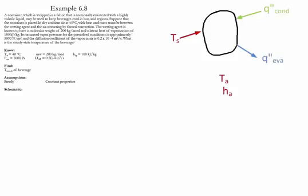Suppose that the container is placed in a dry environment of air at 40 celsius, and there is heat and mass transfer between the wetting agent and the air which is taking place due to forced convection. The information about the wetting agent is given: the molecular weight and the latent heat of vaporization. The saturated pressure at those conditions is given to be 5 kilopascals. The diffusion coefficient is also given. The task is to find out what is the steady state temperature of the beverage in these conditions.